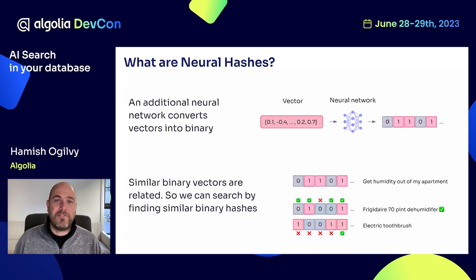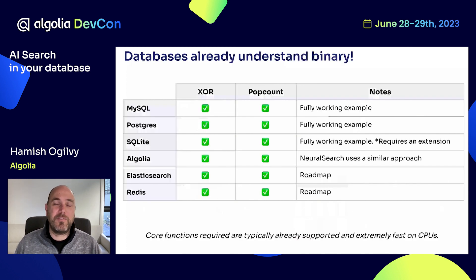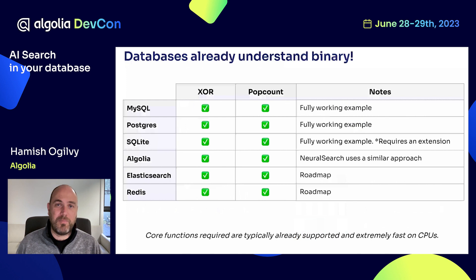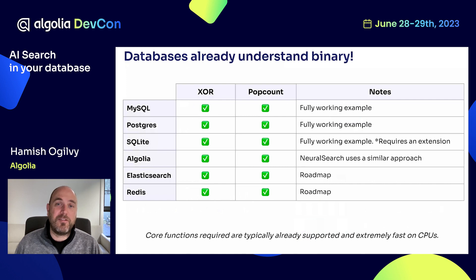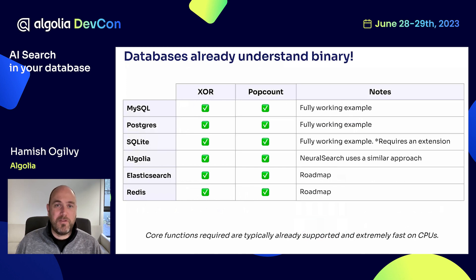The key difference is that you're looking at binary instead of floating point numbers. Databases already understand binary, which is fantastic. The two main bitwise operations — XOR and PopCount — are what you need to integrate neural hashes into any data store. Most common databases and data stores already support these, so it's just a matter of wiring it in. You send your text, images, or content to the Algolia inference API, we return hashes, and then you load them in and use XOR and PopCount for the query traversal.